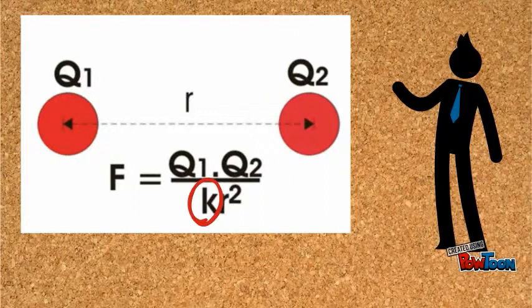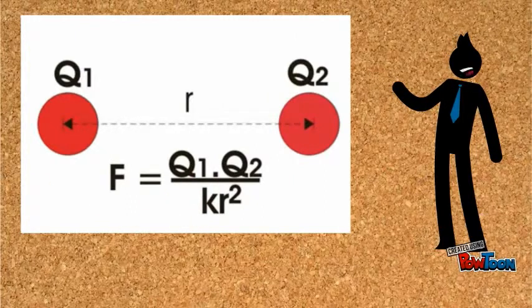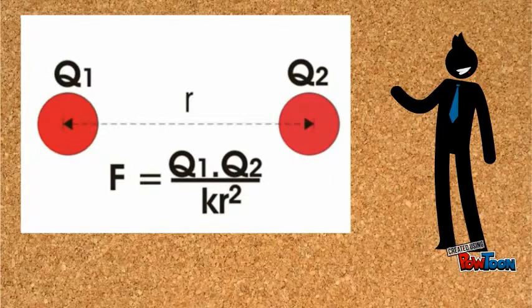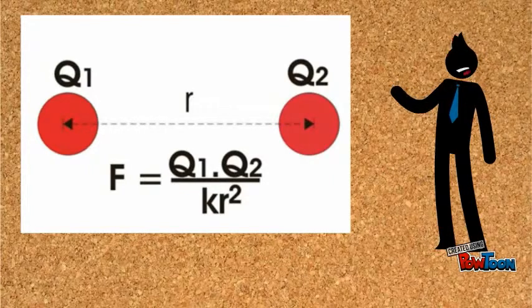Finally, we can say that force F equals Q1 into Q2 divided by K into R-squared. This is nothing but the expression of Coulomb's law.